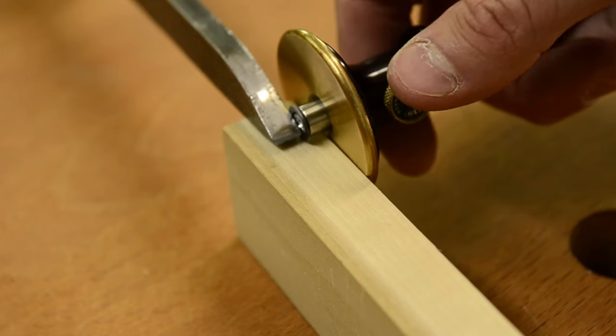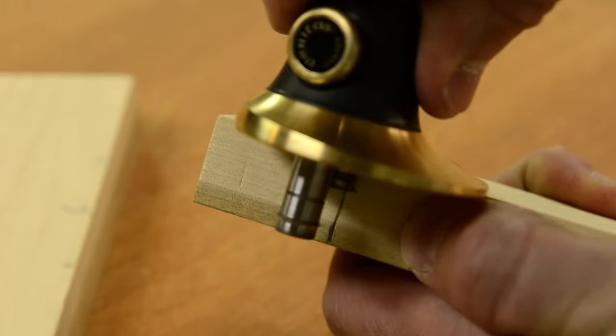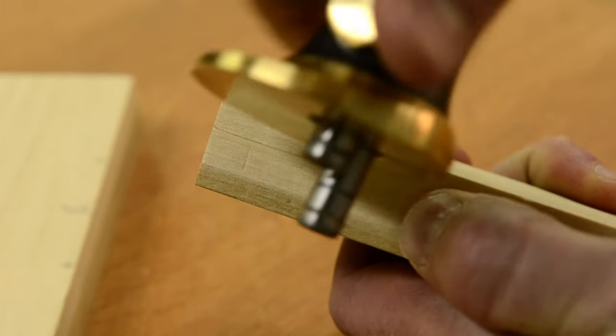If you only have a single marking gauge, you can do this in two steps. Scribe both of those measurements from shoulder to shoulder all around the top of the tenon.